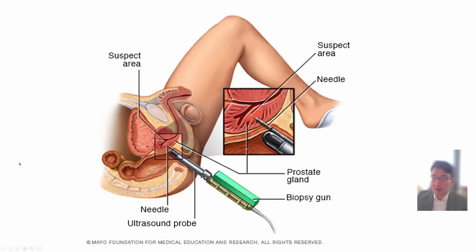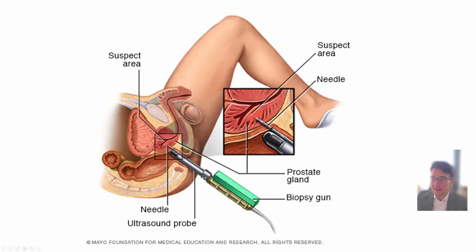Here's an example of a type of biopsy. Here is an image of the prostate, and an ultrasound probe is inserted in the rectum. The probe has a needle, and the needle can go into the prostate. There's also a template that can be used, and these needle cores are then sent for analysis.